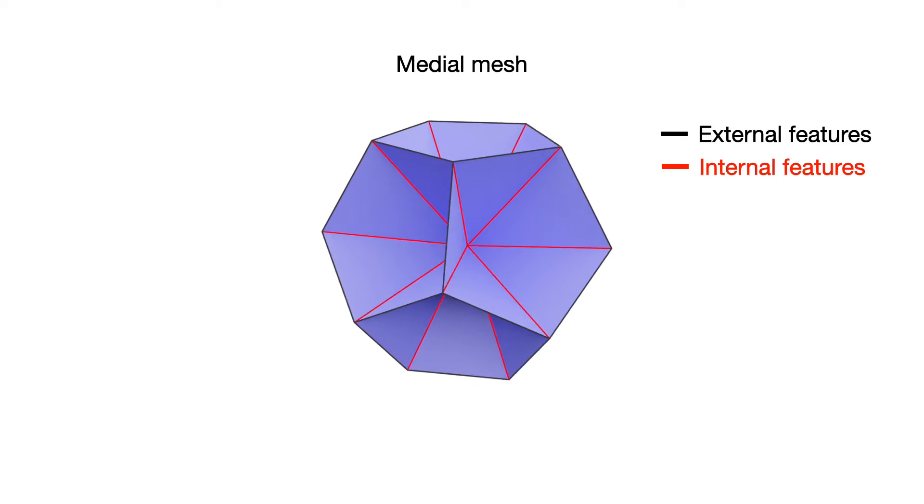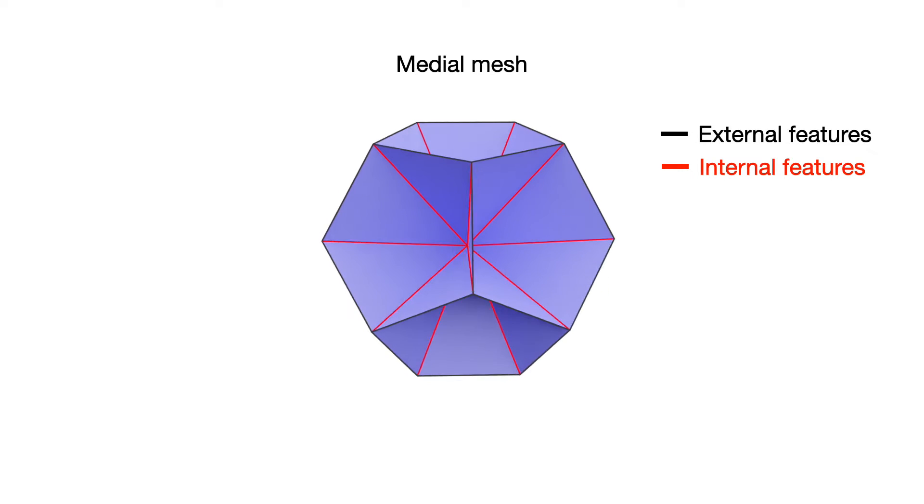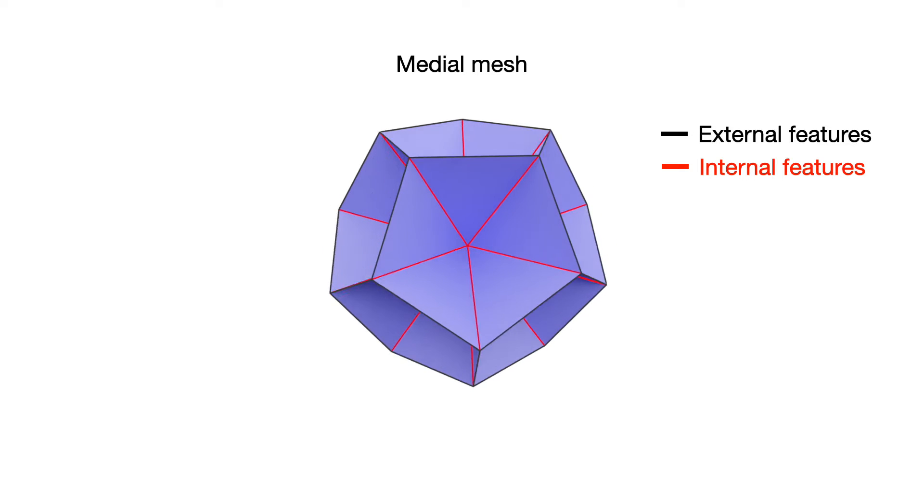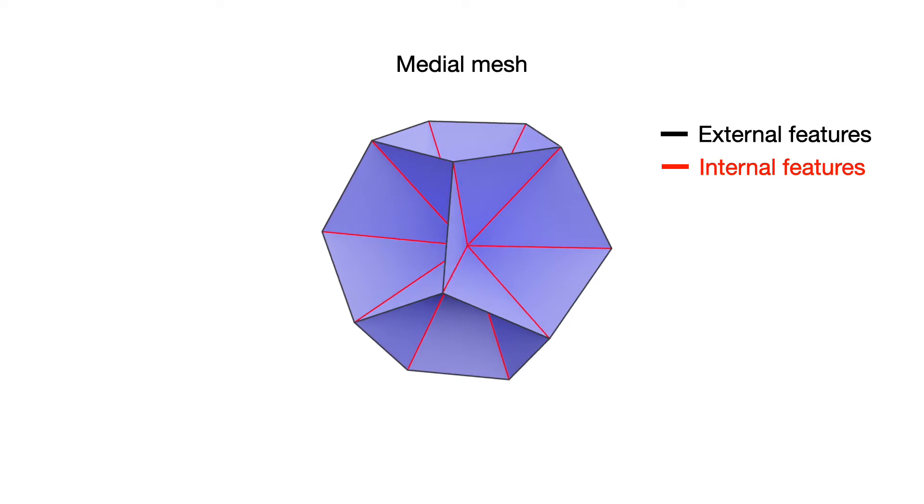Internal features, on the other hand, define the inner topological structure of seams and junctions so that medial axis has a natural decomposition into multiple manifold sheets.